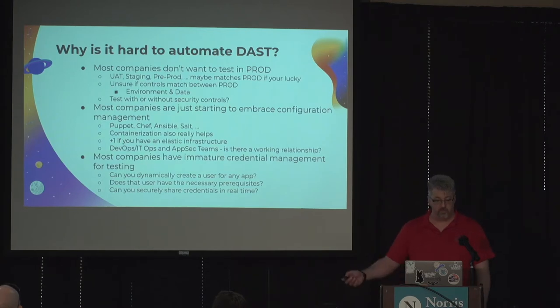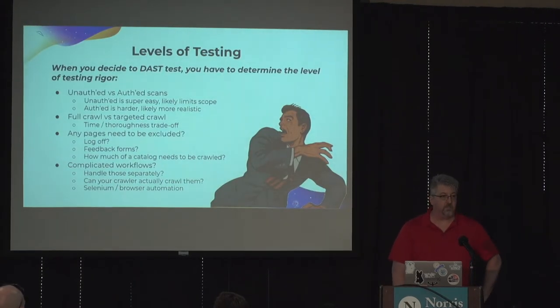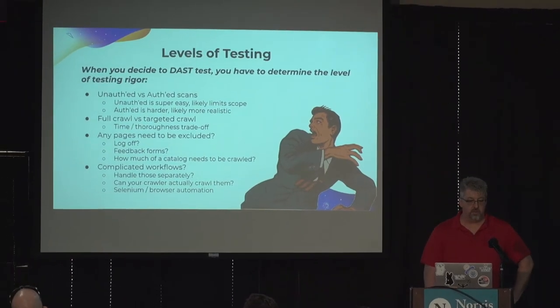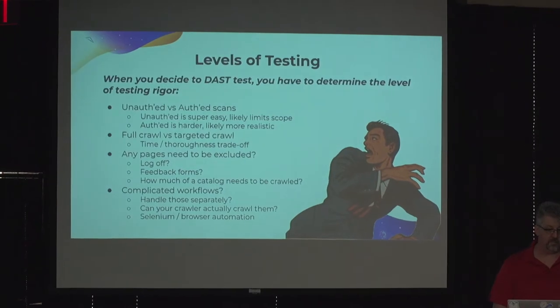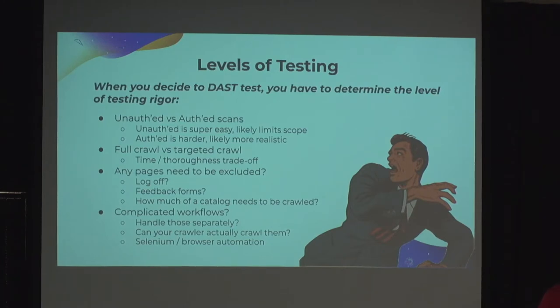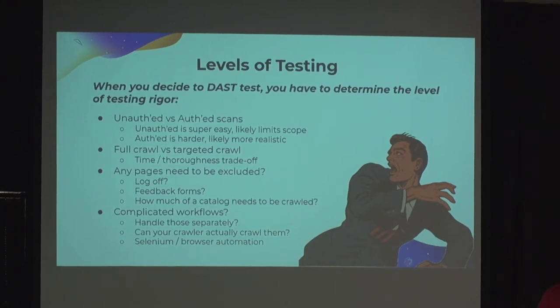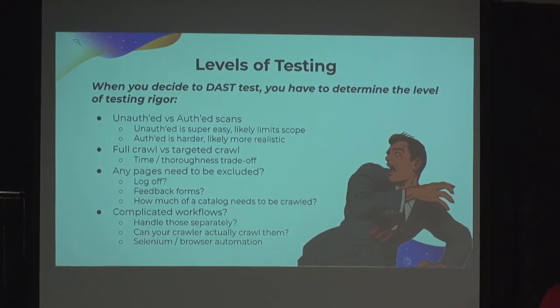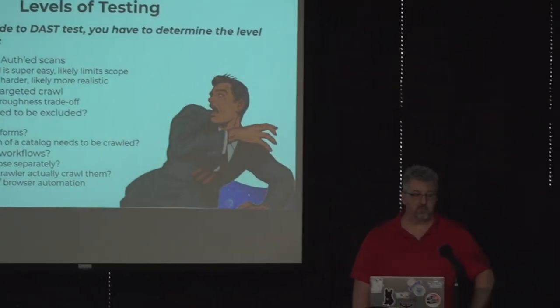There are different levels of rigor you can add to dynamic testing. Two major tracks are unauthenticated and authenticated scans. With unauthenticated, you're looking at your login page, FAQs, signup forms — very basic stuff. Authenticated scanning is harder to configure — you need the correct credentials, finding the right submit buttons is a headache — but it gives you a lot more confidence in what you're finding. The difference between full crawls and targeted crawls comes down to how much of the application you want to scan.